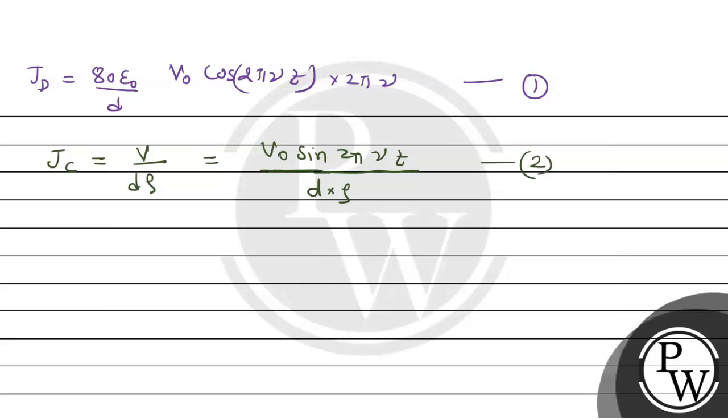So humein 2 values hain, inka use karna hai. Sabse pehli baat importantly yeh hai yahan par ki given kya condition hai. So as per given condition, Jc that is conduction current density hai, that is 10 to the power x into displacement current density.